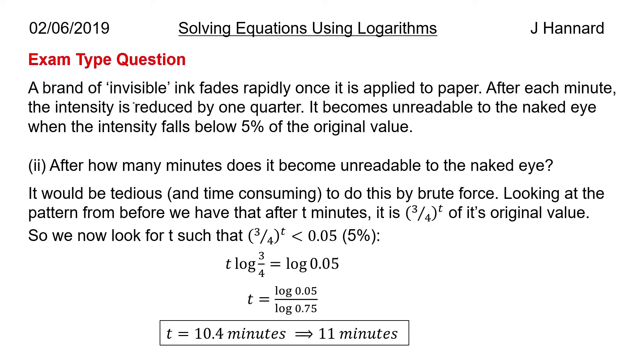Of its original value. So we now look for t such that three quarters to the t is less than 0.05, because we want it to dip under that five percent, so it's not readable to the naked eye. And it tells us in the question it's not readable to the naked eye once you've dipped below five percent. So what do we do? It's a bit of a shame there's no animations here, but we've got an exponential and it's equal to 0.05. So we take logs of both sides, bring the power to the front, so it's t log of three quarters equals log of 0.05.